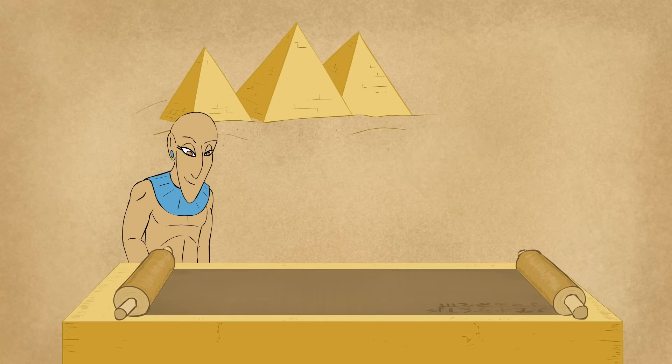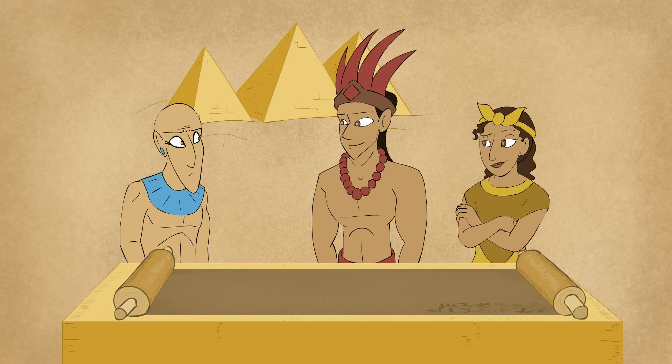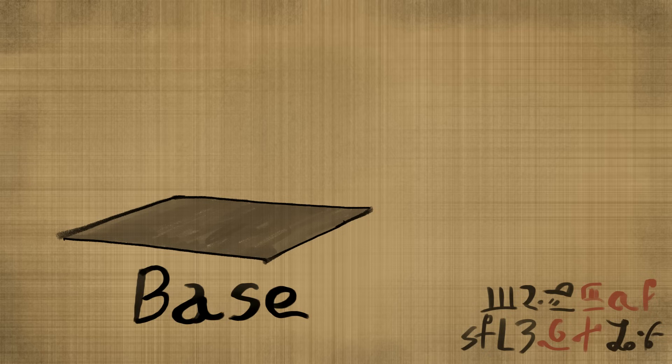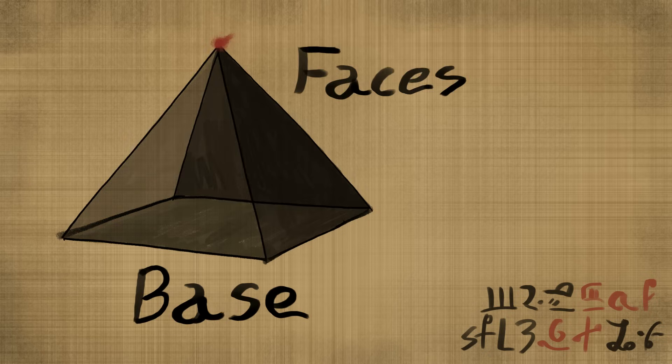Pyramids are what the ancient Egyptians made, the Mayans and the Aztecs did the same. They're made with a polygon at the base, and triangular faces that meet in one place.